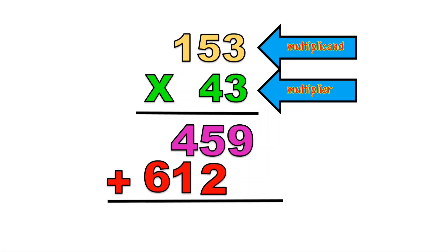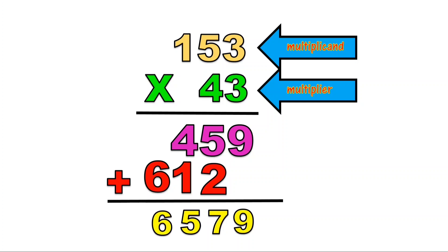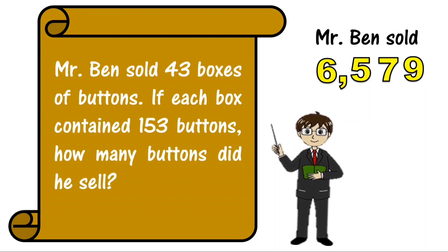Let us add 459 plus 612 to get the product of the given numbers. Bring down 9. 5 plus 2 is equal to 7. 4 plus 1 is equal to 5. Then bring down 6. The product of 153 times 43 is 6,579. Mr. Ben sold 6,579 buttons.